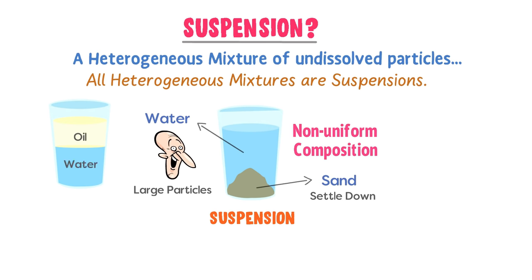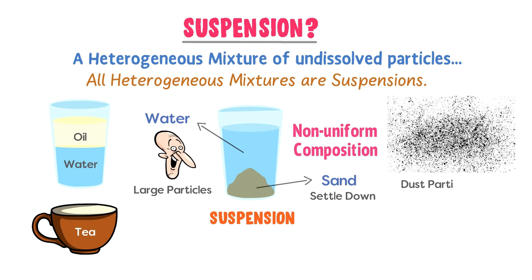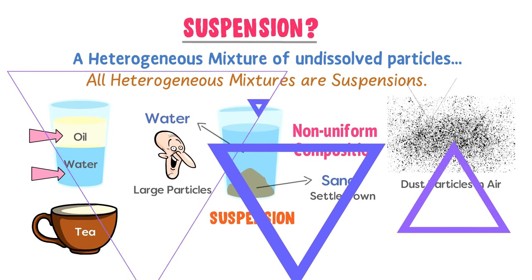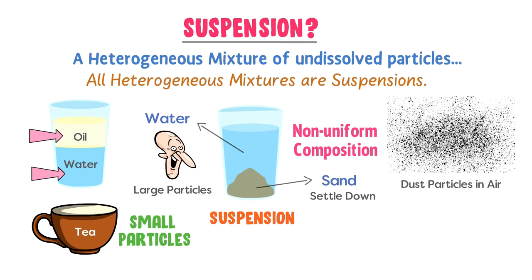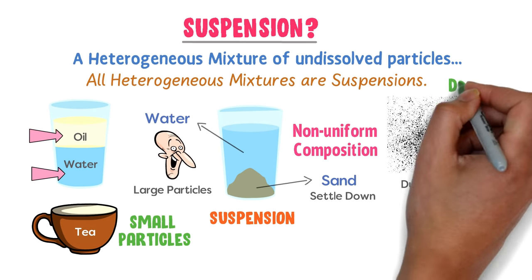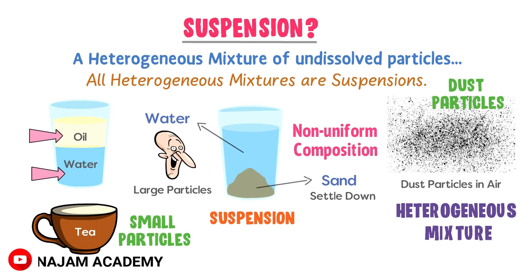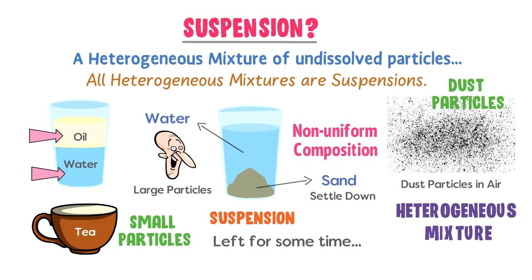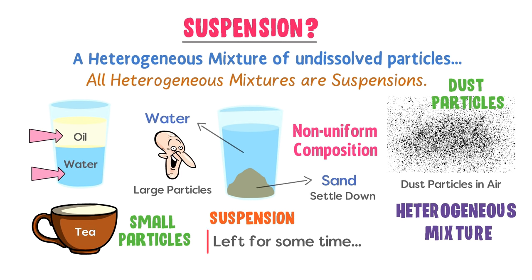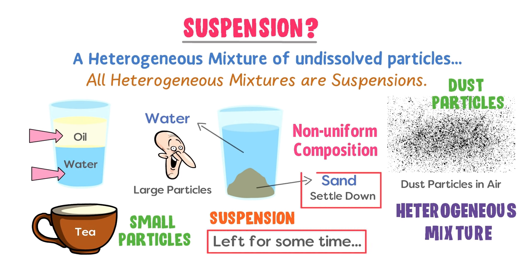Some other examples of suspension are oil plus water, tea, and dust particles in air. In oil plus water, we can spot the layer of oil and the layer of water. In tea, we can spot small particles of tea in the liquid. A suspension is a heterogeneous mixture in which particles are large enough to be seen with the naked eye. If suspension is left for some time, large or undissolved particles settle down at the bottom due to gravity.